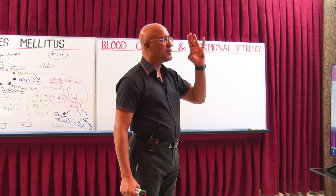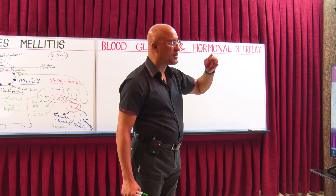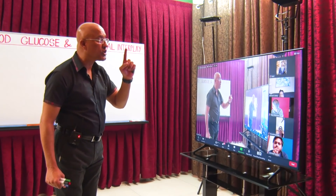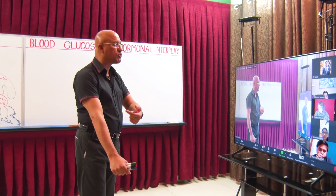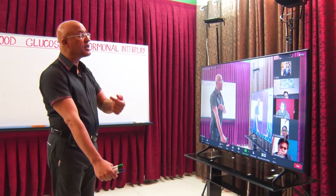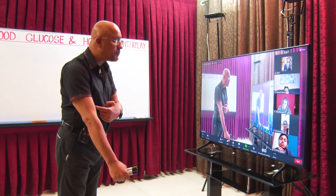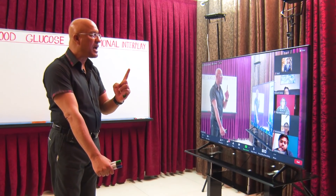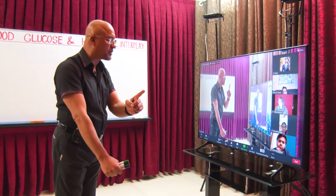When beta cells release insulin, they release C-peptide in equimolar amounts, along with some pro-insulin and amylin. C-peptide levels can be checked in the blood. If C-peptide levels are very low, it means endogenous production of insulin is very low. If a patient is on exogenous insulin by injection, their blood will not have C-peptide if the pancreas is not producing insulin.